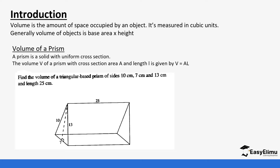You'll notice a pattern as we move on and look at different solids across different lessons. We start with the volume of a prism. A prism is a solid with a uniform cross-section. The volume of a prism with cross-section area A and length L is given as the area of the cross-section times the length.